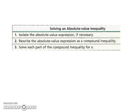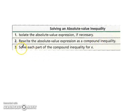Solving an absolute value inequality follows three steps. Step one: isolate the absolute value expression if necessary — in example A it was already isolated, but in B we had to isolate it first. Step two: rewrite the absolute value expression as a compound inequality. Step three: solve each part of the compound inequality for x.